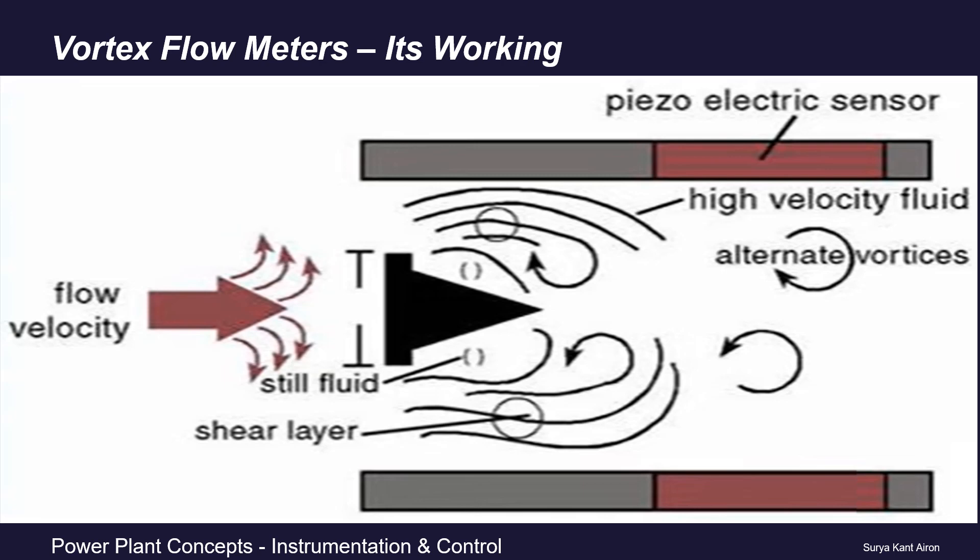The generation of vortices is known as the Kármán effect or Kármán vortices. The culmination point of these vortices will be approximately 1.2 times the pipe diameter downstream of this vortex shedder. At this particular point — 1.2 times downstream — we install our vortex detector or sensor.